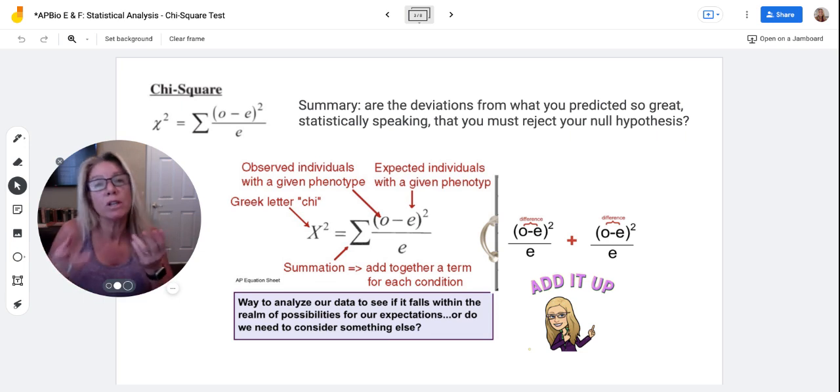This is looking at what you might predict for your data for an experiment and what you actually got, and you're looking to see is the difference so large that there must be some other variable causing these results.